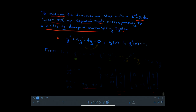The first thing we're going to do is convert this ODE into a system. We're going to let y' equal v. If y is displacement, then y' is velocity, so I'm naming it v. Then y' becomes v', so that means anywhere I see y' in this ODE, I will write that as v' instead.